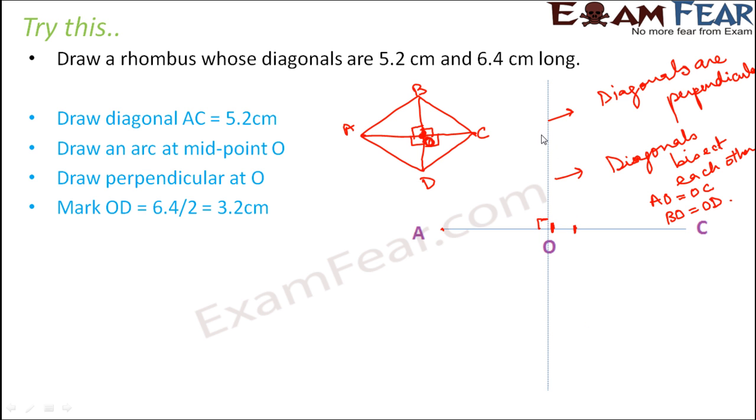Now we mark OD so we have drawn AC we have drawn this perpendicular also but we have to find out where exactly this point B and this point D lies. So for that we know the distance of OB and OD because the total distance BD is given as 6.4 cm. So if BD is 6.4 we know that BO is equal to DO so BO and DO will be half of 6.4 which would be 3.2 cm. So from O we mark the point D at a distance of 3.2 cm. Similarly we mark the point B at a distance of 3.2 cm.